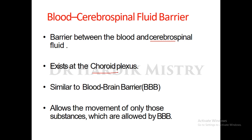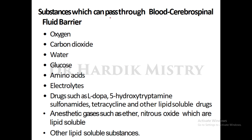Blood-cerebrospinal fluid barrier: this is a barrier between the blood and CSF that exists at the choroid plexus, which is the site of formation and secretion of CSF. It is similar to the blood-brain barrier and allows movement of only those substances also allowed by the blood-brain barrier. In the brain there are two barriers: the blood-brain barrier and the blood-CSF barrier.